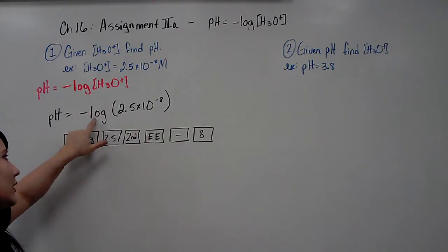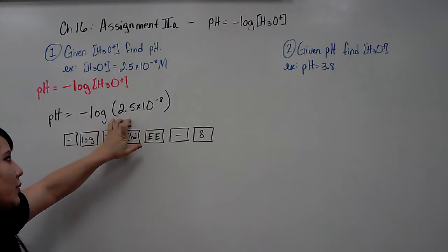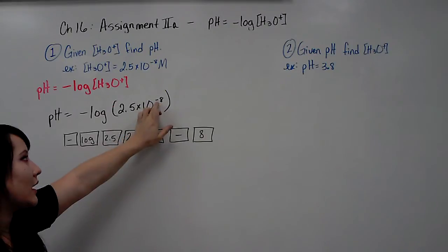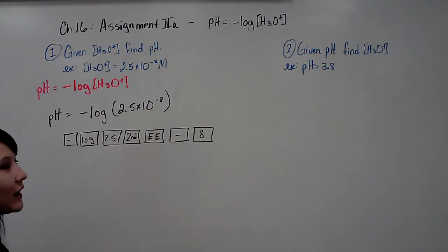So hit the negative button, hit the log button, type in 2.5 E negative 8, and then hit enter, and that should give you your answer as the pH.